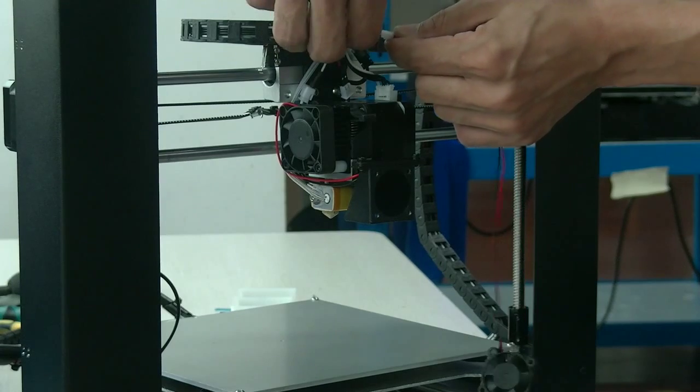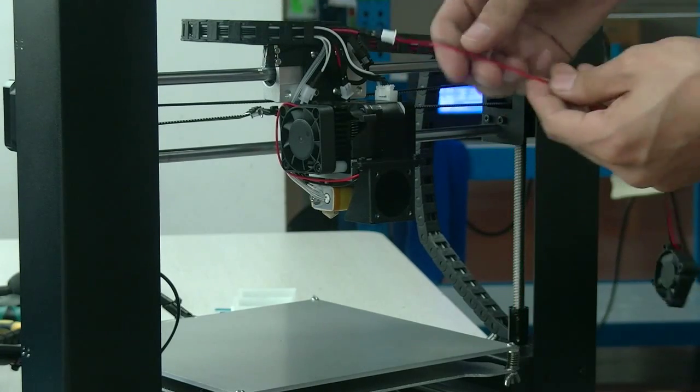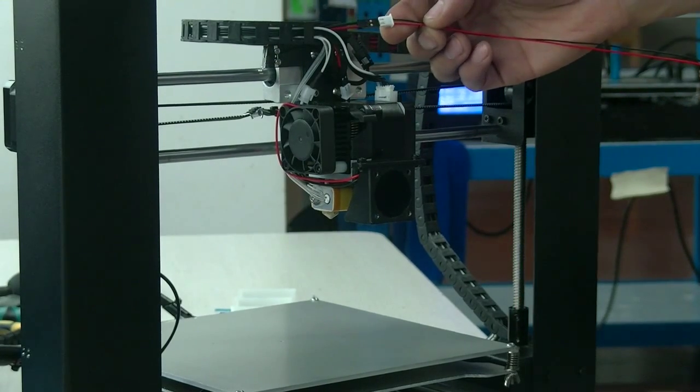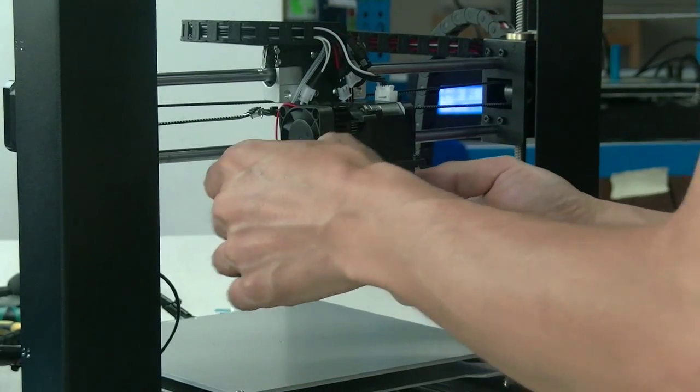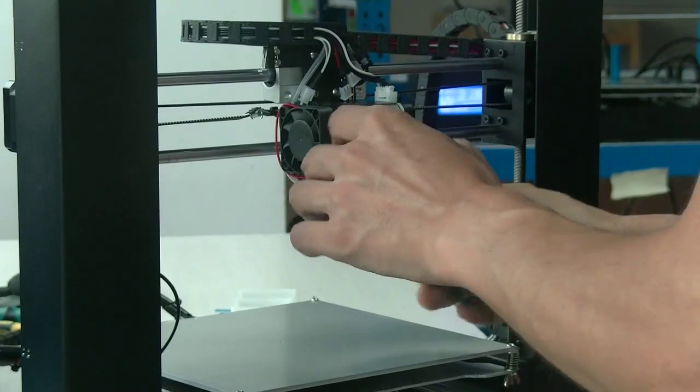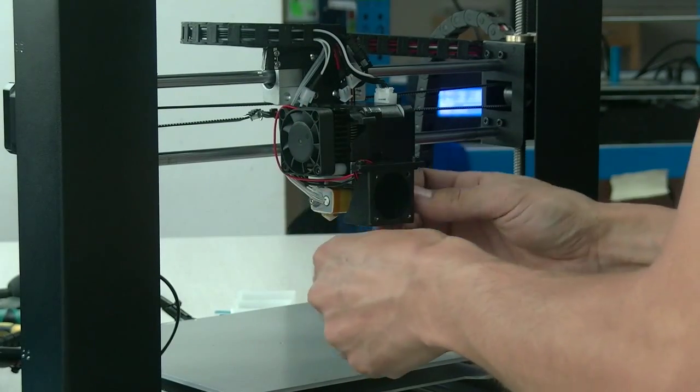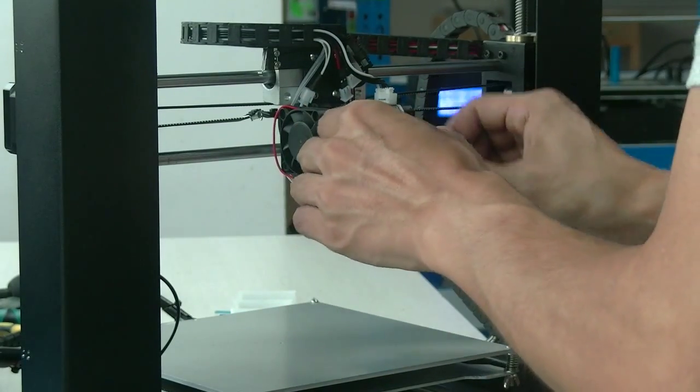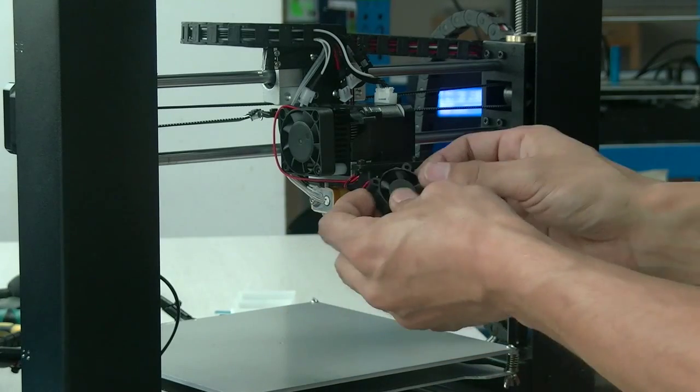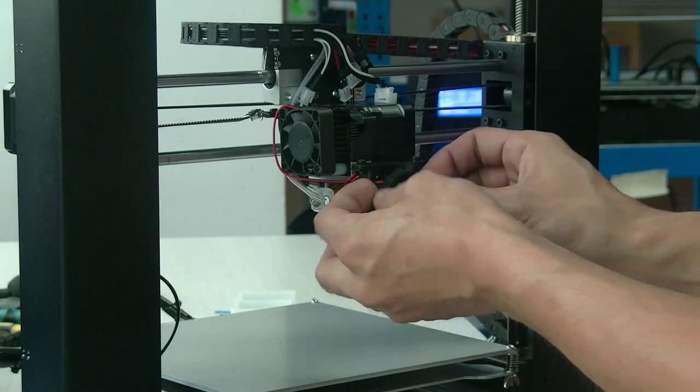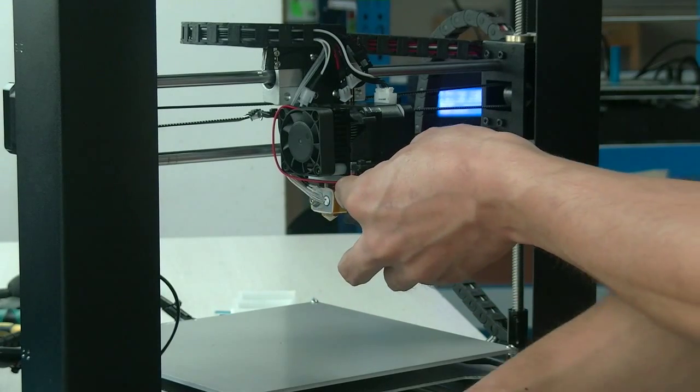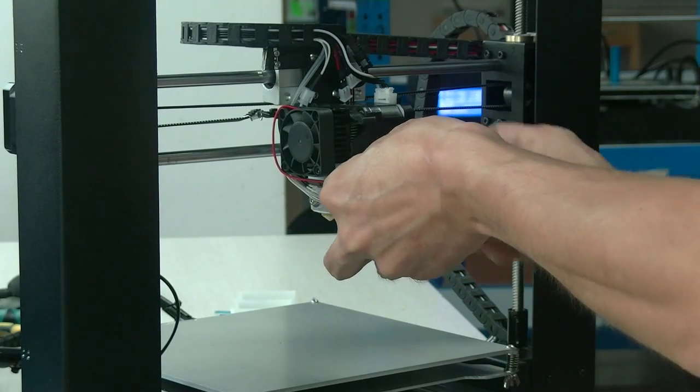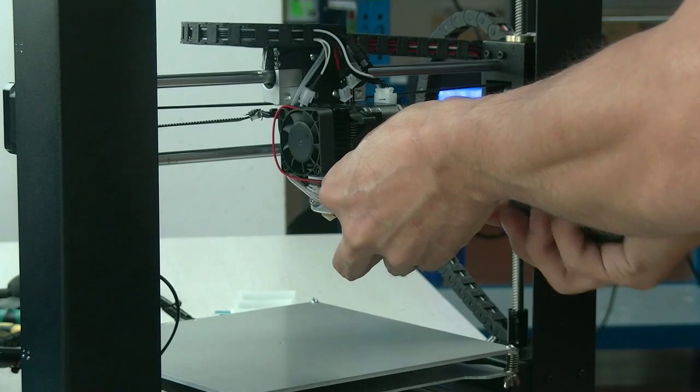So make sure to match it correctly, insert it, and then relock the fan onto the extruder. Please handle with care. Do not use too much strength because it's very thin wire.